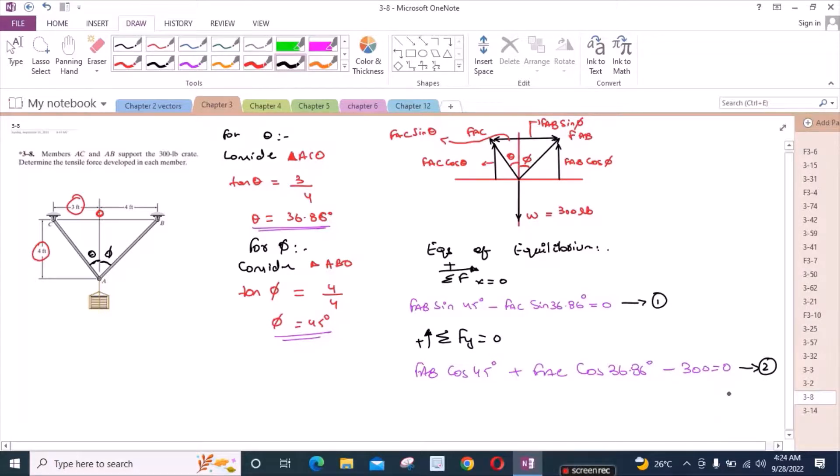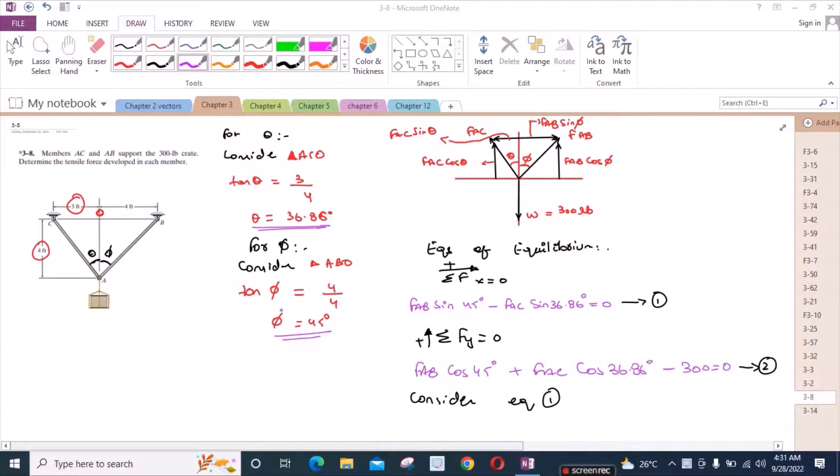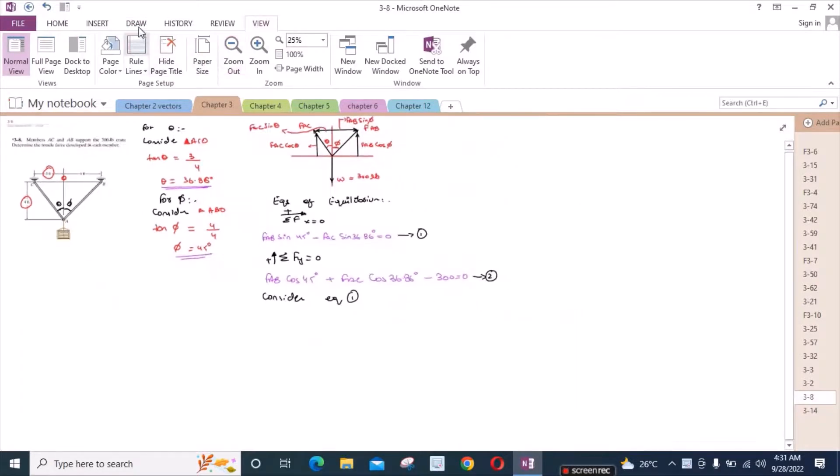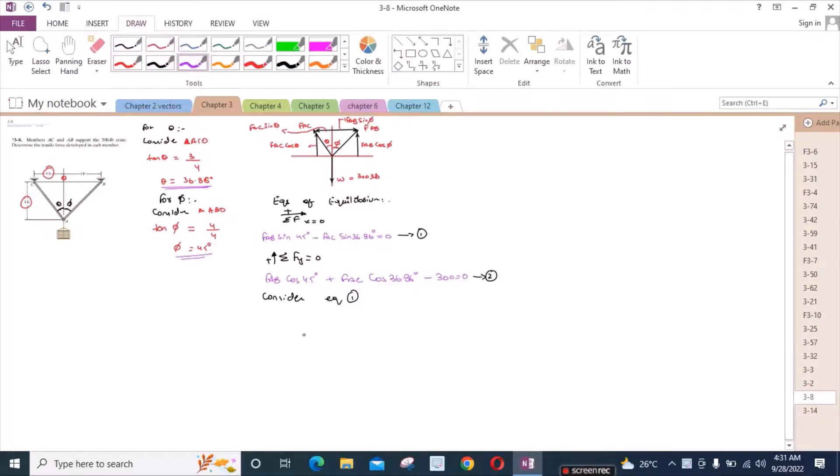Now from equations 1 and 2, if we consider equation 1, from equation 1, FAB is equal to FAC sin 36.86 degrees divided by sin 45 degrees. Let's call this equation A.